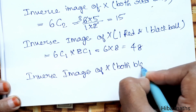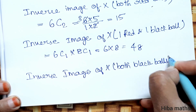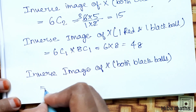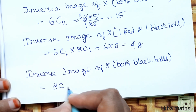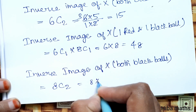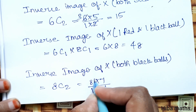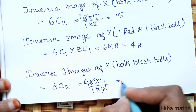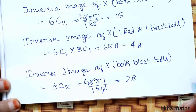For both black balls, x = −20: 8C2 = (8 × 7) / (1 × 2) = 28.